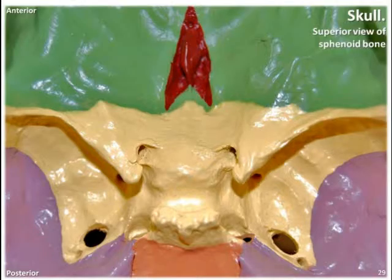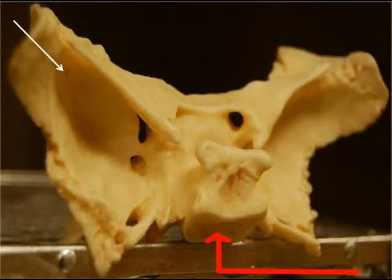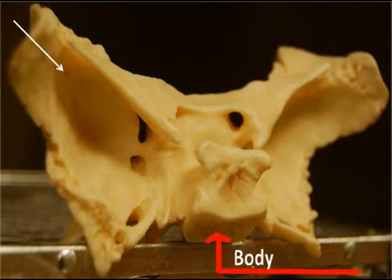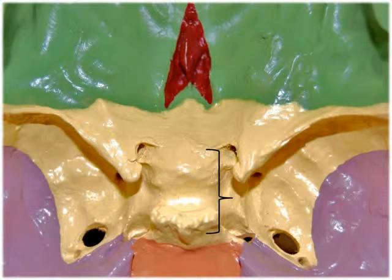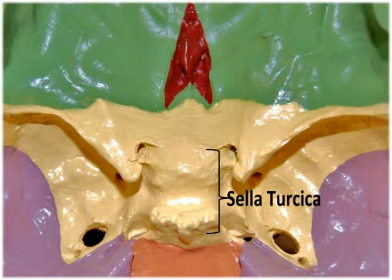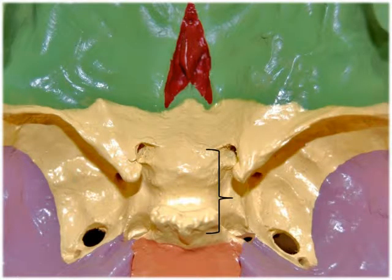The sphenoid bone's shape is very unique — it resembles a moth or a bat in flight with its wings outstretched. It has a number of distinct bony landmarks and foramina. The body of the sphenoid bone is the box-like medial portion found between the ethmoid and occipital bones. Within this body is a hollowed space called the sphenoidal sinus, which drains into the nasal cavity. On the superior surface of the body is a saddle-shaped structure called the sella turcica; use this as a key landmark to locate the other bony structures and foramina.